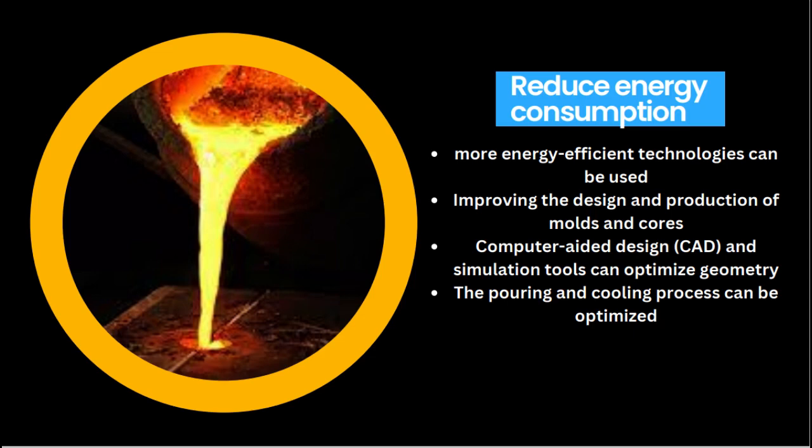Improving the design and production of molds and cores is another way to reduce waste and energy use. Choosing materials with strong thermal conductivity and heat resistance for molds and cores enables quicker cooling and less energy consumption during solidification. Computer-aided design (CAD) and simulation tools can optimize geometry and use less material, with additive manufacturing (3D printing) being particularly efficient in reducing energy usage and material waste.